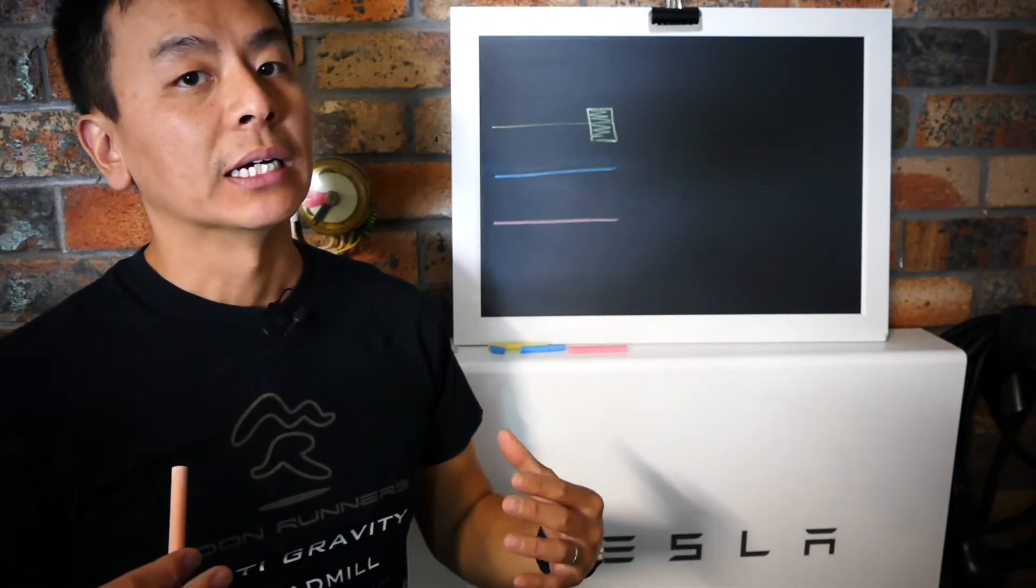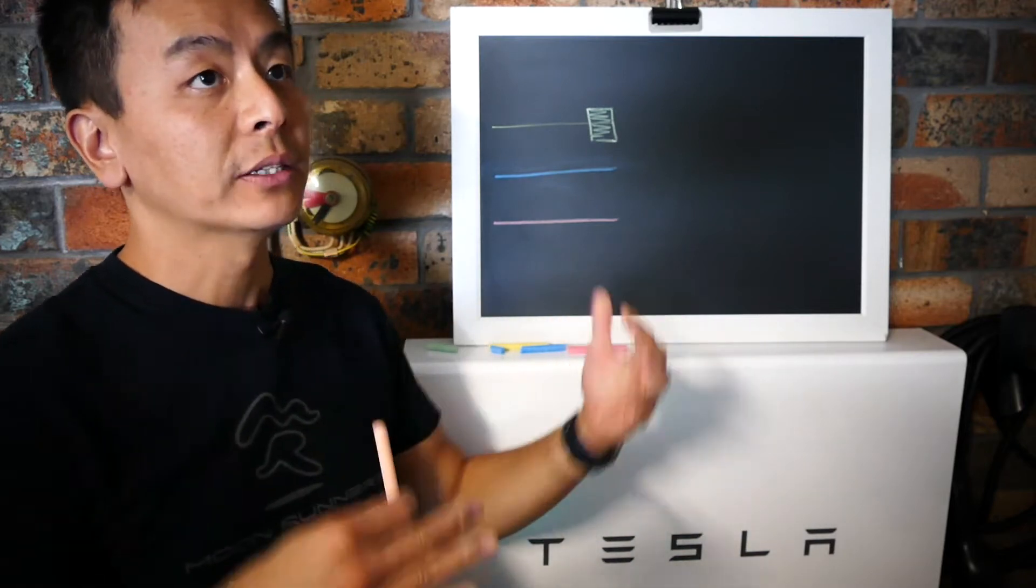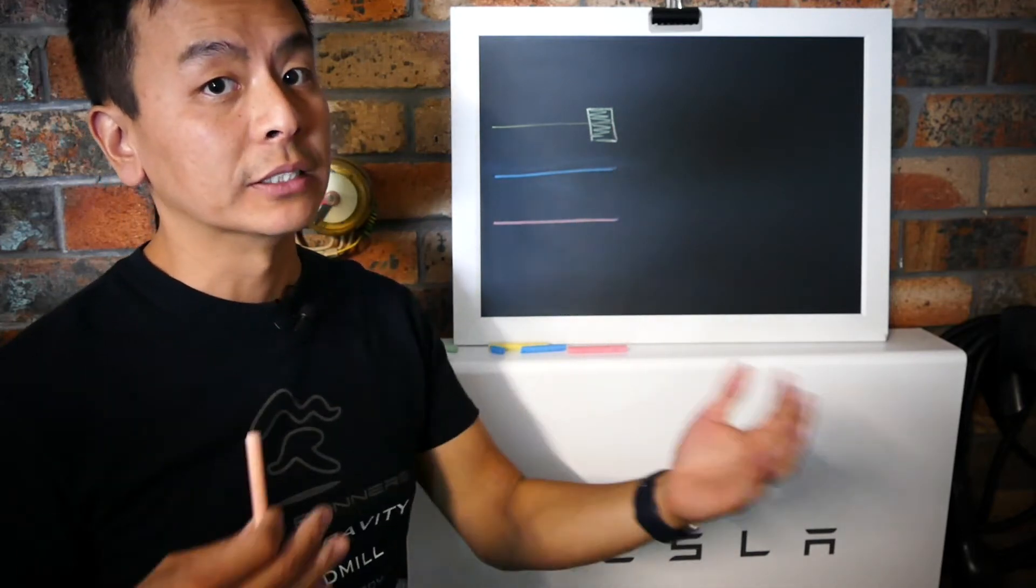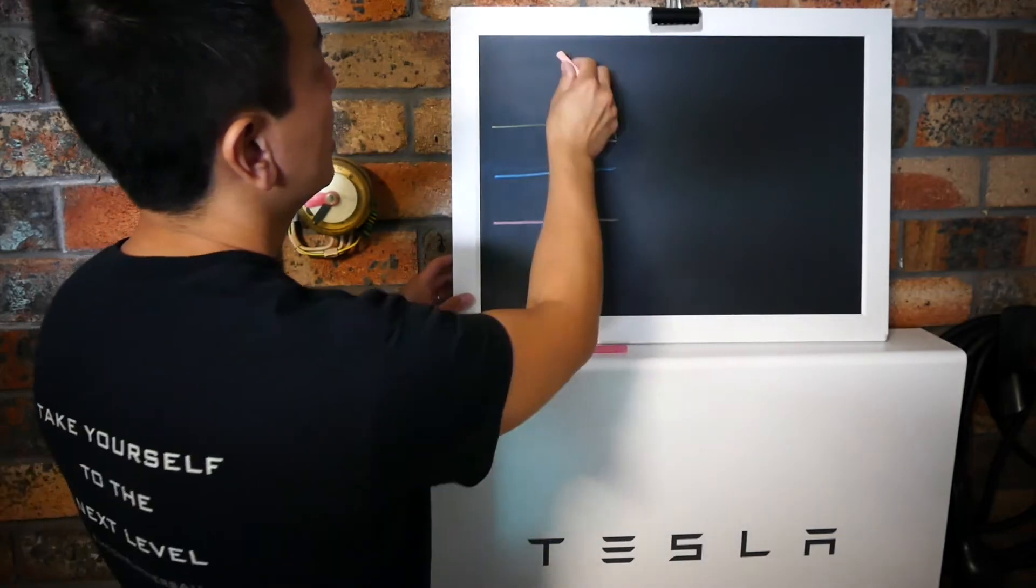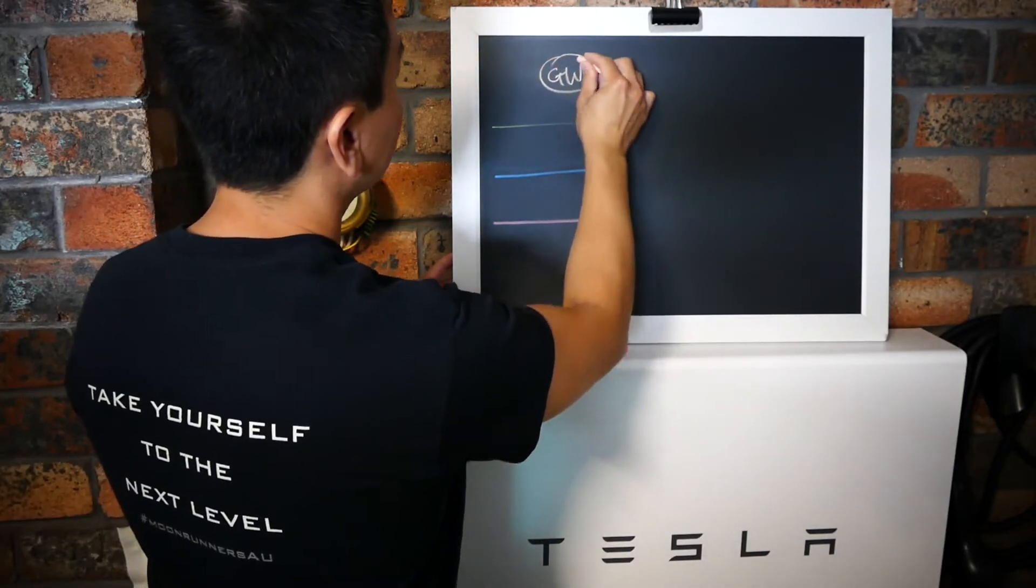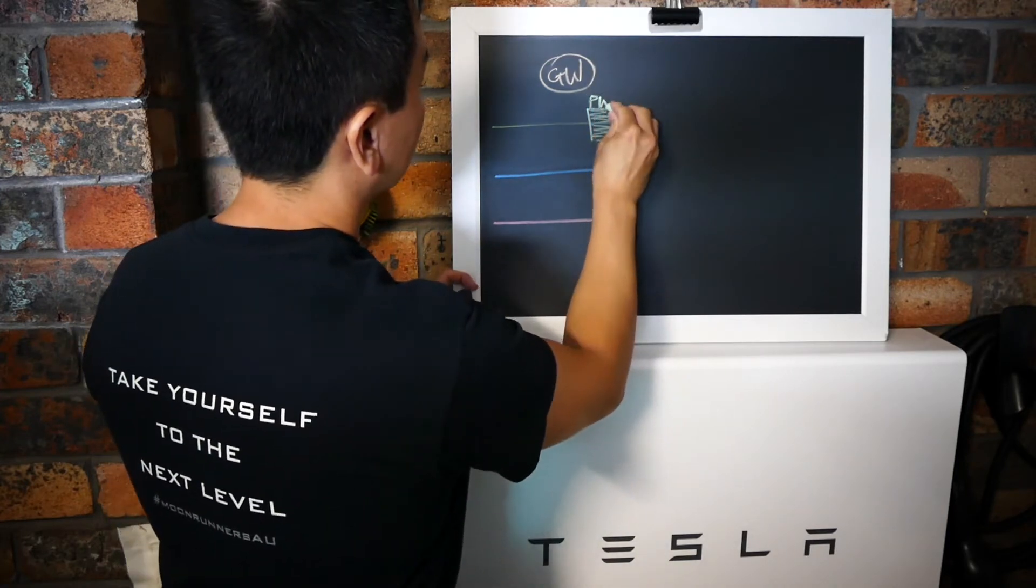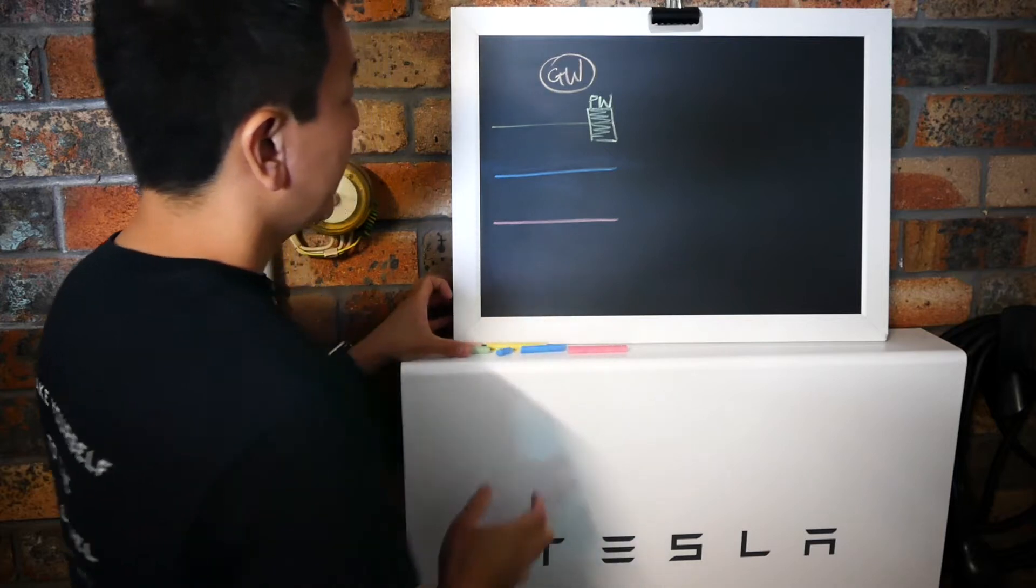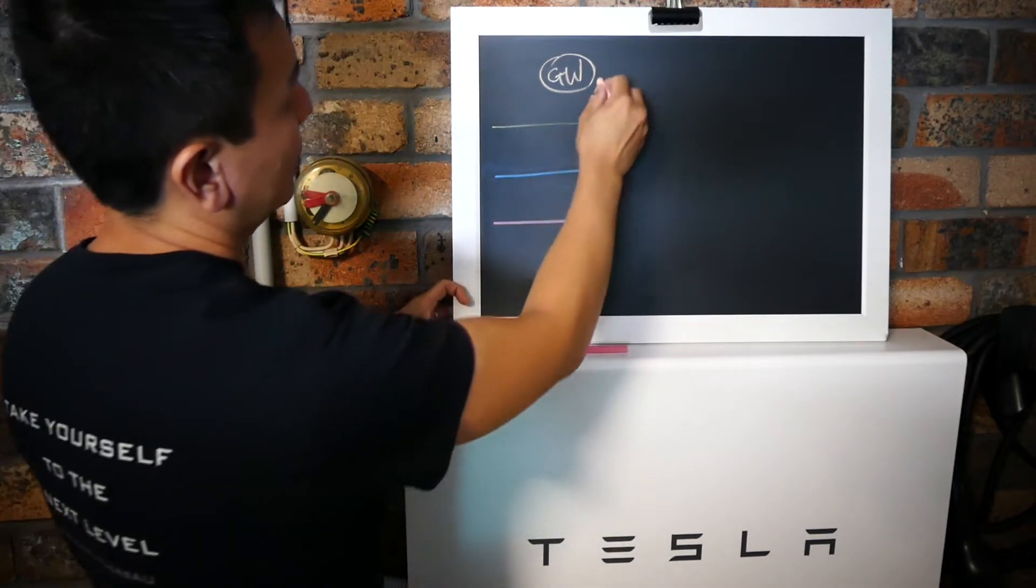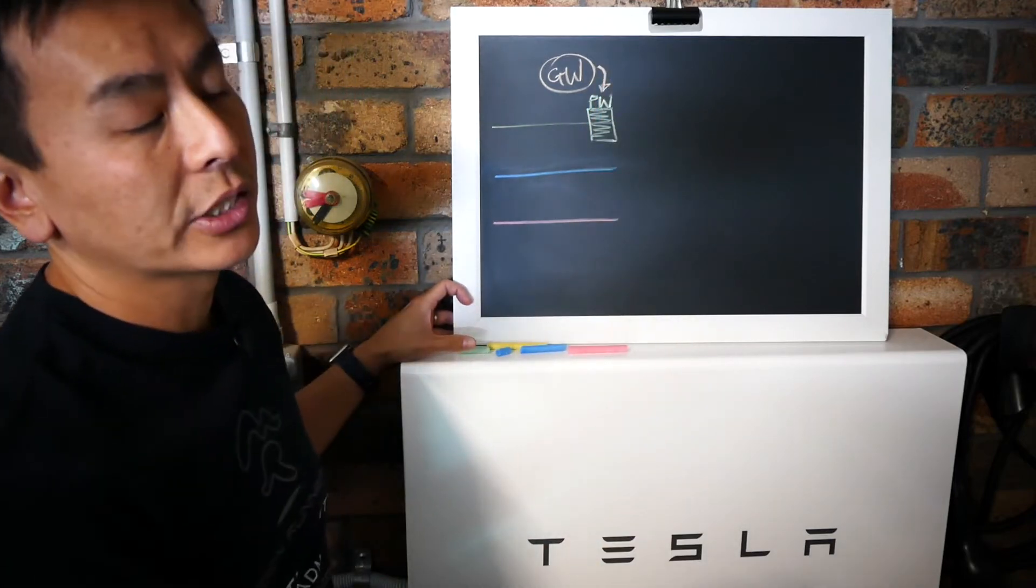Now the Gateway essentially acts as the brain of your power supply. It monitors and meters all the electrical usage in your house and tells the Powerwall 2 and the solar system and the grid when to discharge and charge. So we're going to call this circle here the Gateway. Call that GW and this one is the Powerwall.